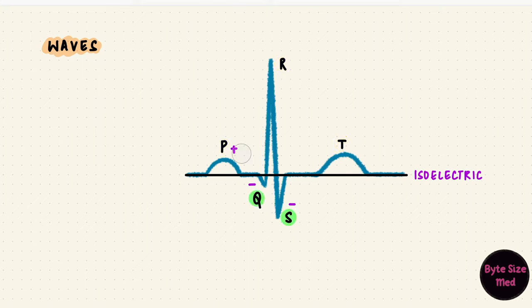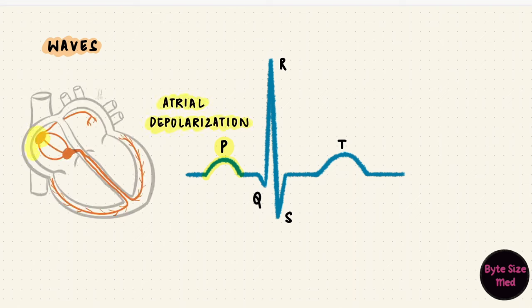The P wave represents atrial depolarization. So this wave would happen just prior to the contraction of the atria. After depolarization, the atria have to repolarize, but there's no wave visible for that, because it gets buried in the QRS complex.